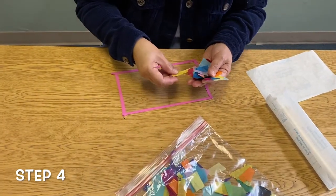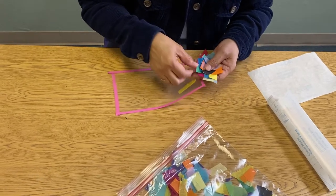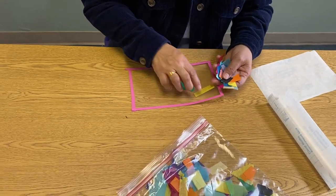Step 4. Stick the pieces of tissue paper on the contact paper in whatever pattern you like.